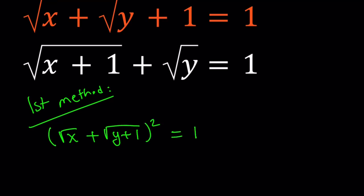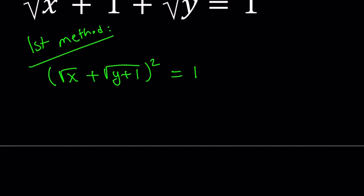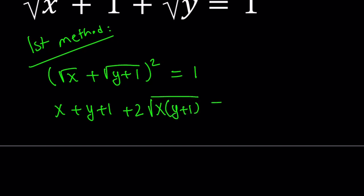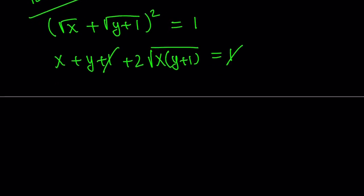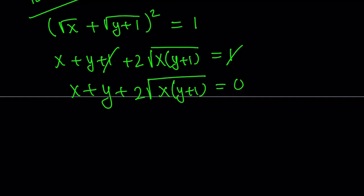When I square both sides in the first equation, I get 1 again. Let's expand it. Using the (a+b)² formula, this gives me x, y plus 1, and 2 times the square root of x times (y+1). This equals 1. The 1 cancels out, leaving us with x plus y plus 2 times the square root of x times (y+1) equals 0.